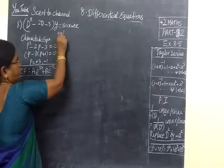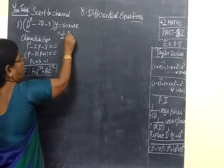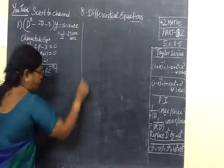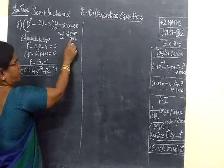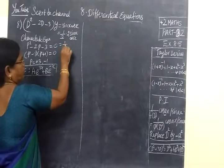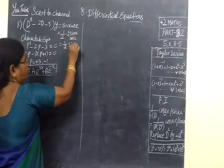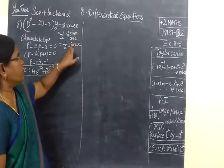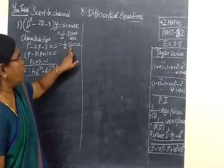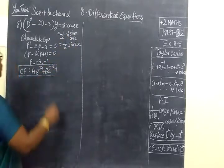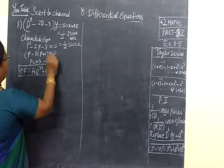Sin X cos X is 1 by 2 into 2 sin X cos X. Because we know in formulas that 2 sin A cos A equals sin 2A. So this is sin 2X. We can write it in that form. Put 1 by 2 outside, inside 2, then we get sin 2X. This is one F of Y, so many times we did.